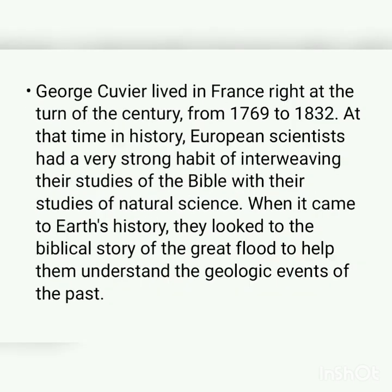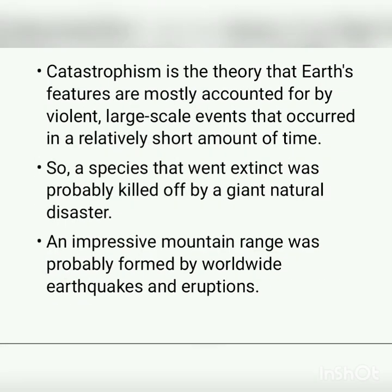The concept was proposed by Georges Cuvier. At that particular time, European scientists had a trend of collaborating their studies of the Bible, like the Great Flood, with their studies of science. Catastrophism is a theory that Earth's features are mostly accounted for by violent, large-scale events that occur in a relatively small amount of time — like a species that went extinct was probably killed off by a giant natural disaster, or an impressive mountain range was probably formed by worldwide earthquakes and eruptions.